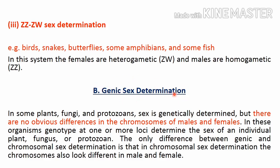The second mechanism of sex determination is genic — based on genes. In some plants, fungi, and protozoans, sex is genetically determined but there are no obvious differences in the chromosomes of males and females. The chromosomes look similar in both males and females, making it difficult to differentiate between them. This is known as genic sex determination, where genes on these chromosomes determine sex.